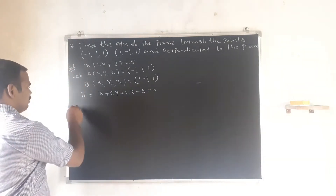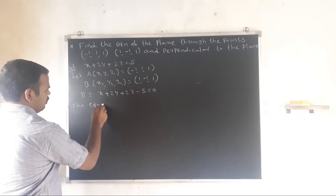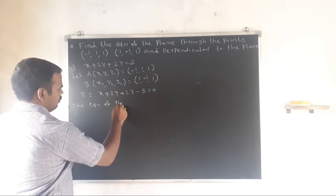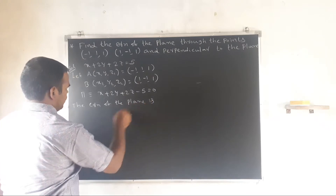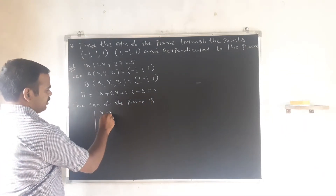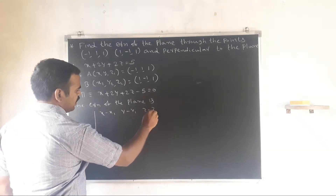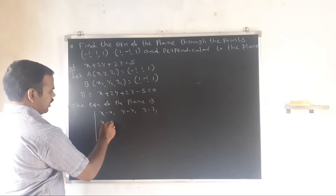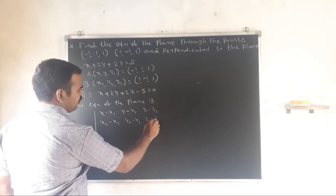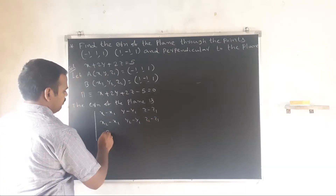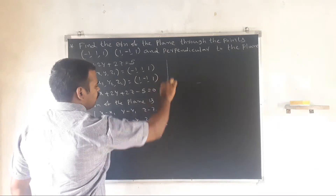The equation of the plane is the determinant of: (x minus x1, y minus y1, z minus z1), (x2 minus x1, y2 minus y1, z2 minus z1), (a, b, c) equal to 0.